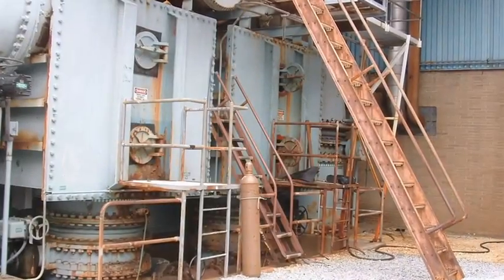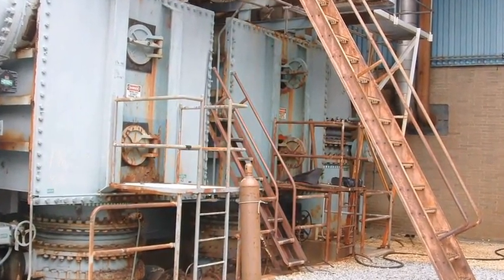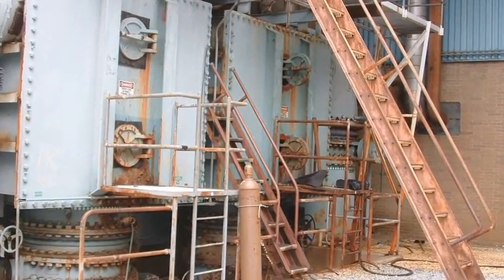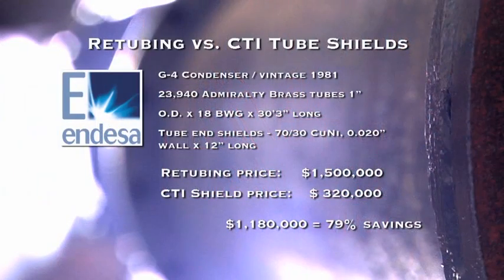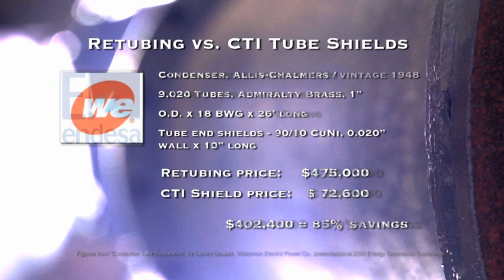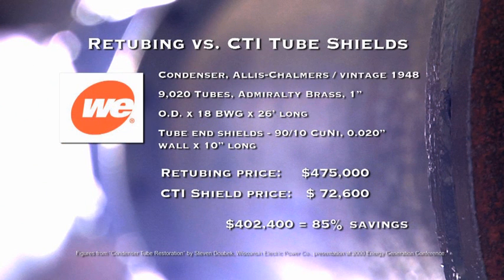For large steam condensers, water boxes remain in place and workers gain access through the manways, eliminating another major task required for retubing. Companies can save up to 90% of the cost of retubing and provide years of equipment life extension.